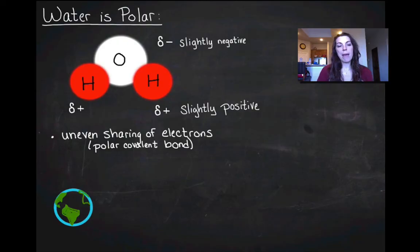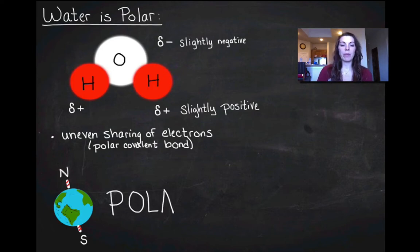So if you imagine the earth, and we know that there's a north pole and a south pole on the earth. I've got my north pole and my south pole, and we think of that as polar. So you can kind of think of your water molecule the same way, except you've got a positive pole and a negative pole.